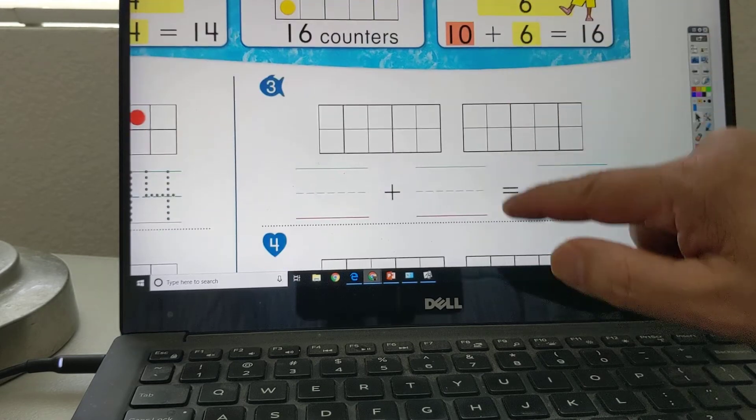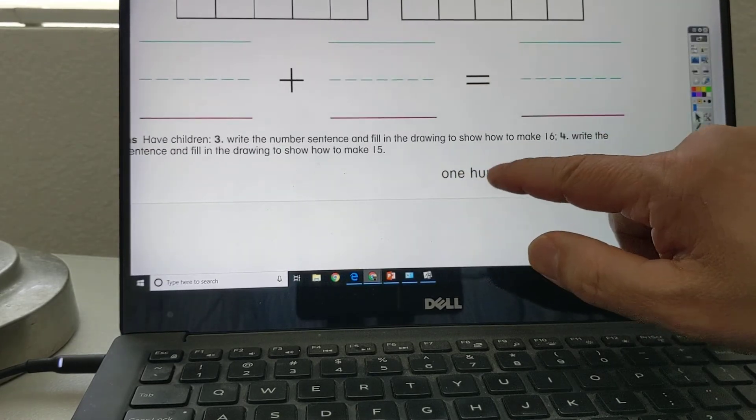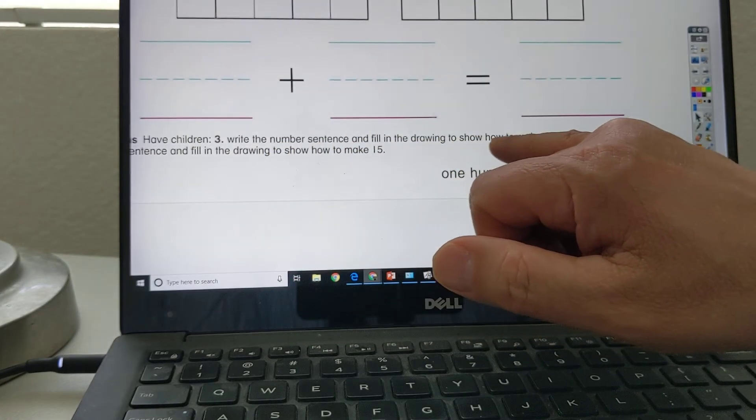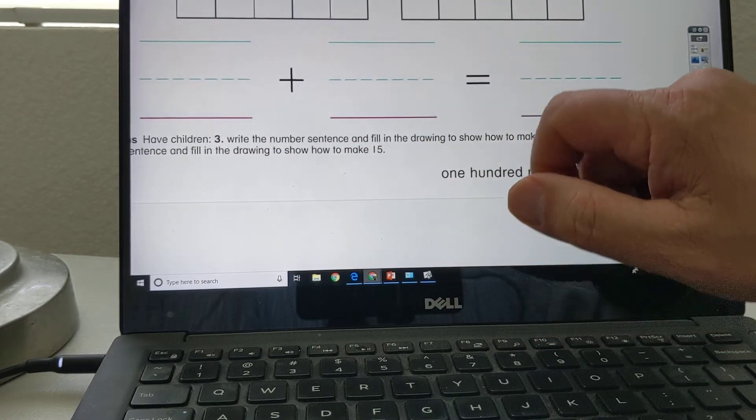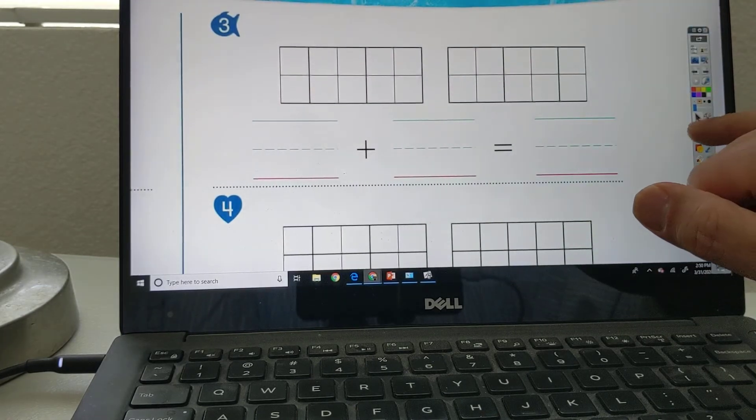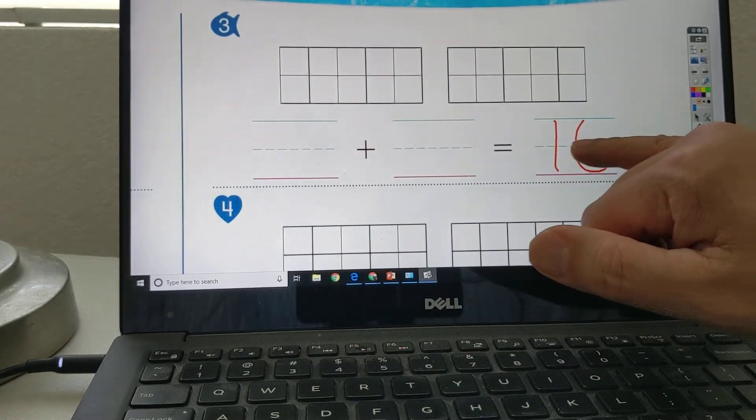All right, this side. Number 3. Let's see what 3 says. Number 3 says, write the number sentence and fill in the drawing to show how to make 16. So number 3, 16. So here's 16. How to make 16.